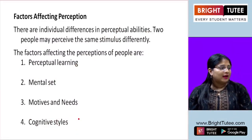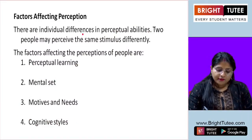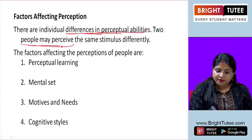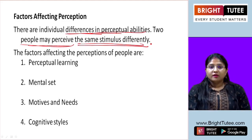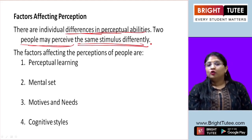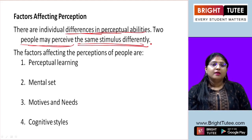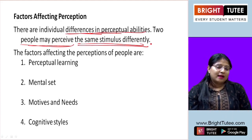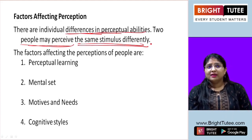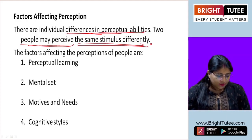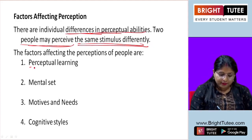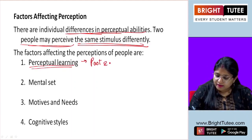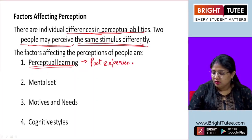Now let us talk about the different factors that affect perception. There are individual differences in perceptual abilities. Two people may perceive the same stimulus differently because of what they have learned from their past experiences. The set of morality and characteristics they have means the same stimulus can give different results. The first factor is perceptual learning, which is based on past experience and special training.